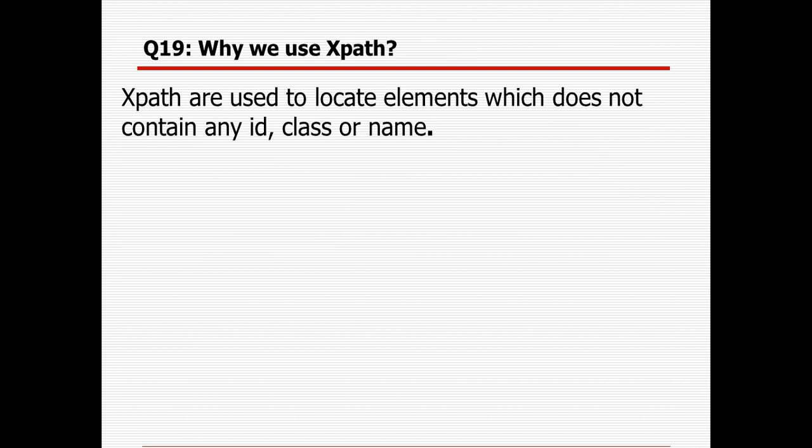Why do we use XPath? We generally use XPath when an element does not contain any ID, class, or name. If we are not finding any ID, class, or name and the available attributes are not unique, we have to create our own XPath or CSS selector to identify the object.